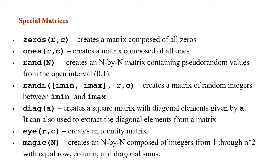The function magic(n) — we're not going to use it in this lab, but it might be useful in the future depending on your application. It takes an integer as input and creates an n by n matrix composed of integers from one through n squared with equal row, column, and diagonal sums, meaning the elements in each row, column, and diagonal will all add up to the same number.